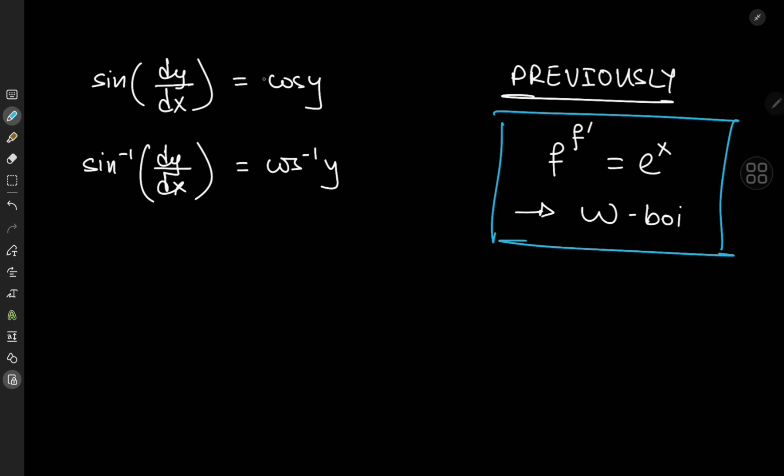For the first equation, notice that we can write the cosine term on the right as sine of pi by 2 minus y. That gives us the equality of two sine functions.